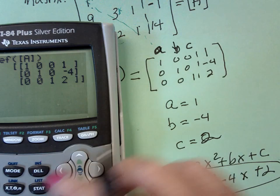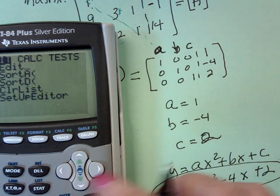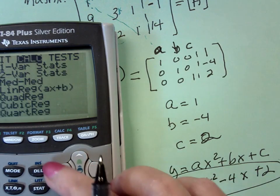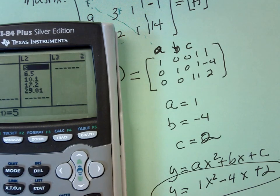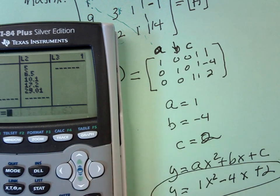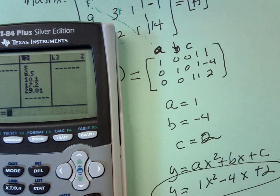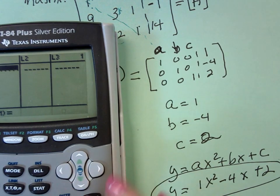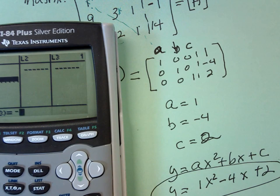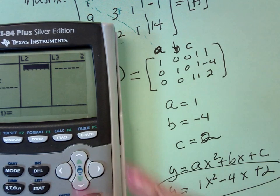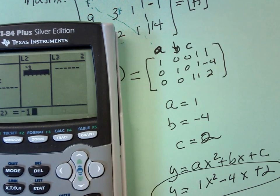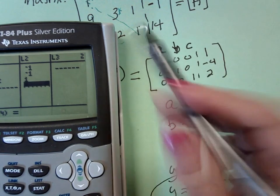If I wanted to do a quadratic regression, stat, edit, and I'm going to clear that guy and that guy. The three coordinate points are, so X's are 1, 3, negative 2, Y's negative 1, negative 1, 14.